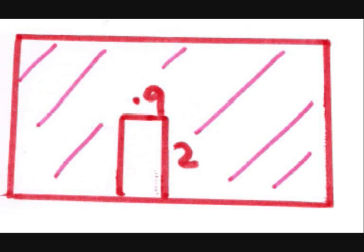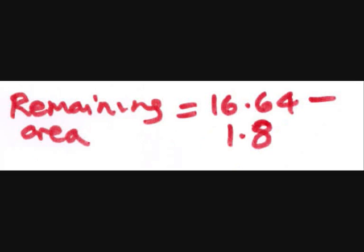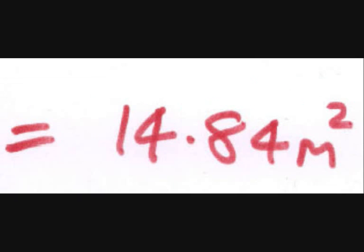So what we do, we remove the door from the wall. The area of the wall, 16.64 metres, minus the area of the door, 1.8 metres. And that gives us our answer, 14.84 metres.